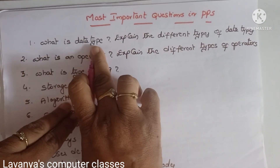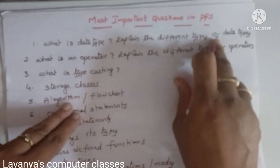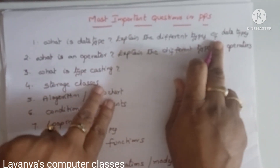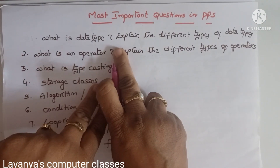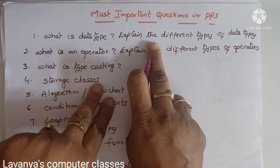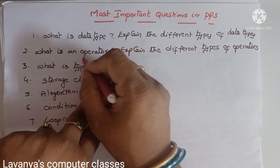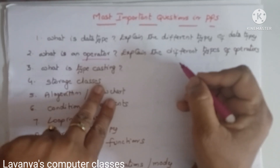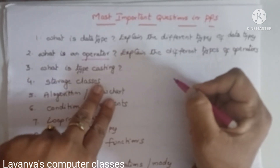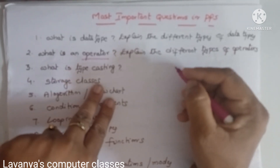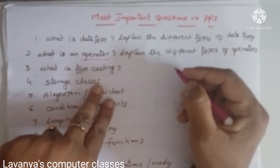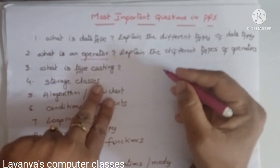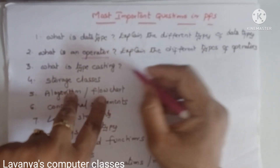The first important question is: what is a data type? Explain the different types of data types, their ranges, and syntaxes in C language. The next very important question is: what is an operator? Explain the different types of operators in C language. They may ask all operators in a single question or in different formats, such as explain bitwise operators or explain relational operators.